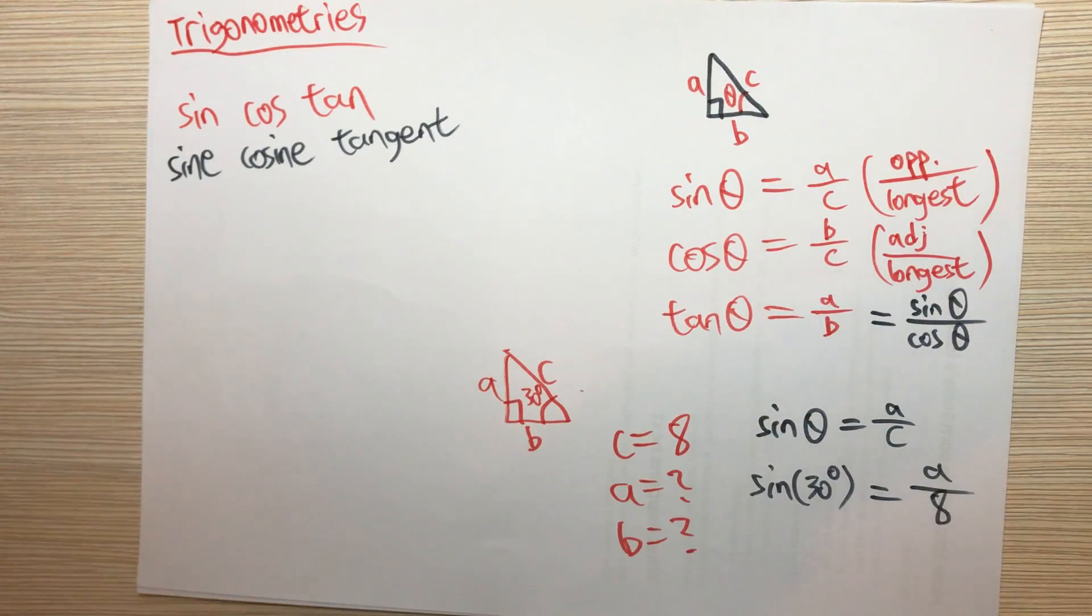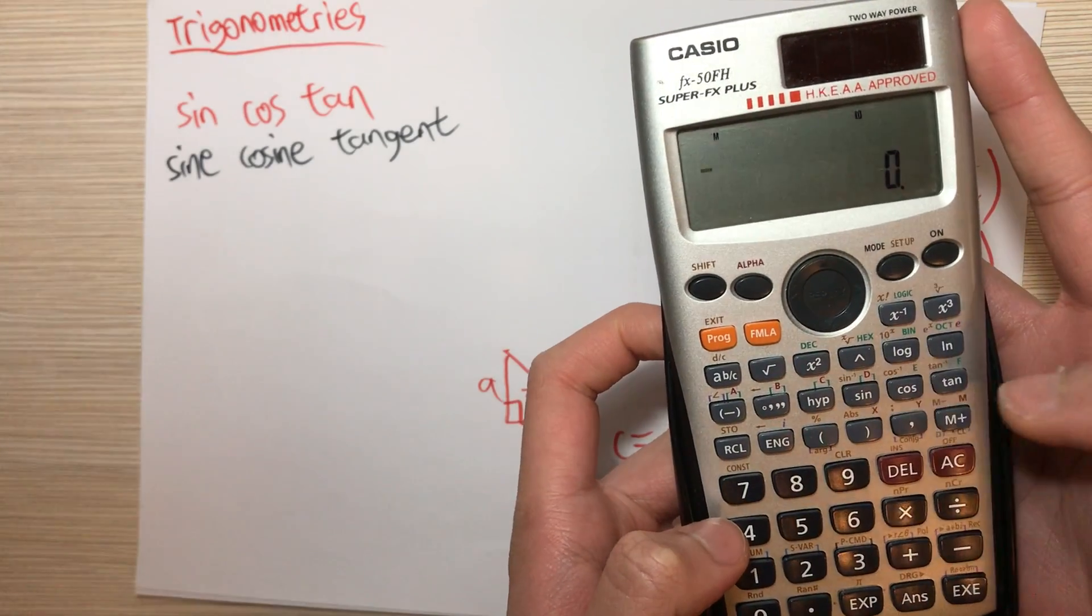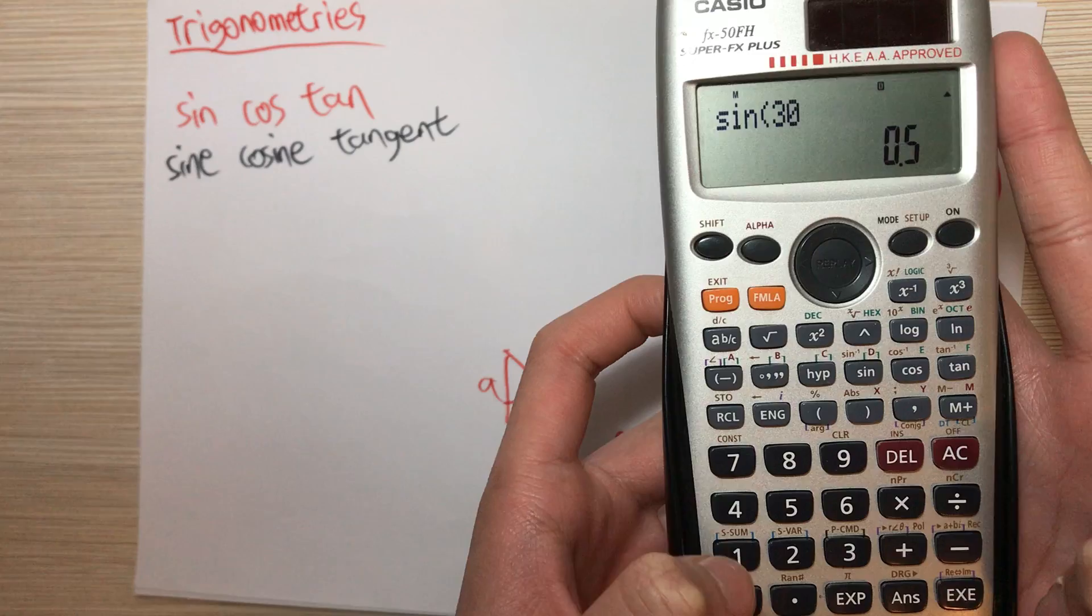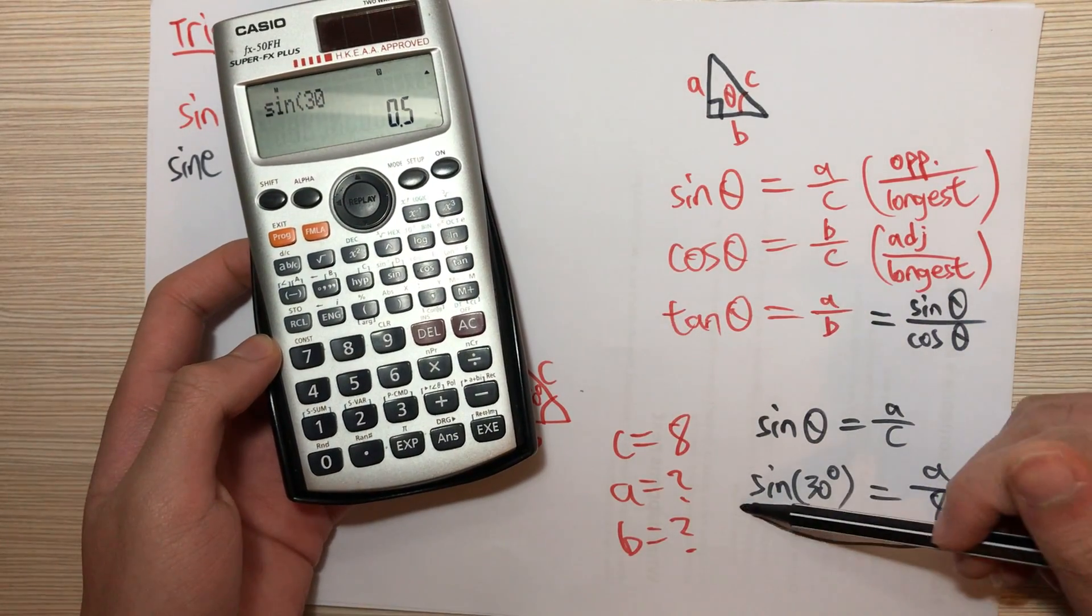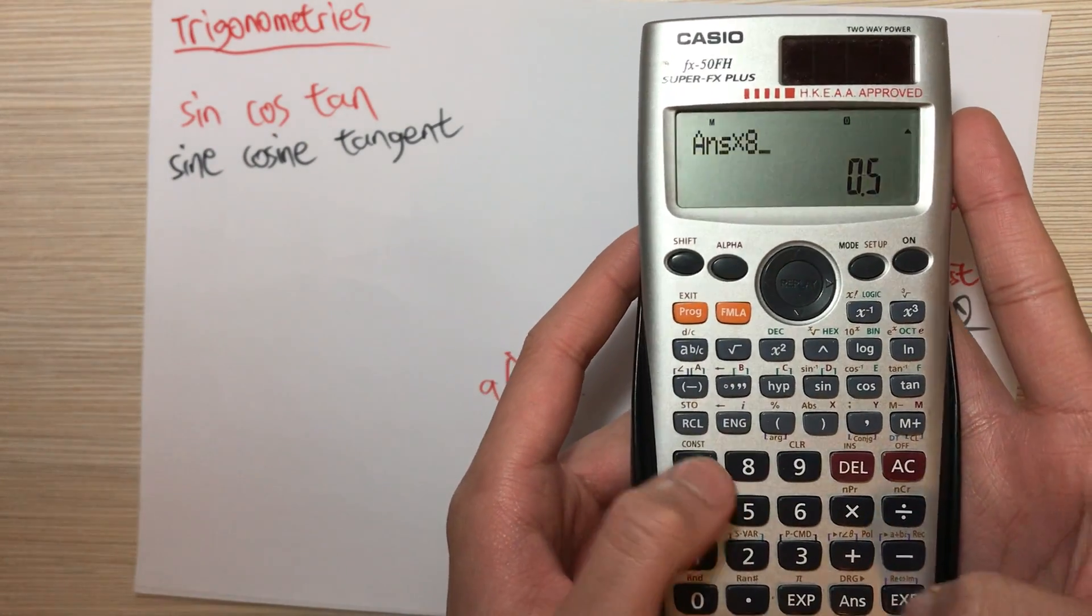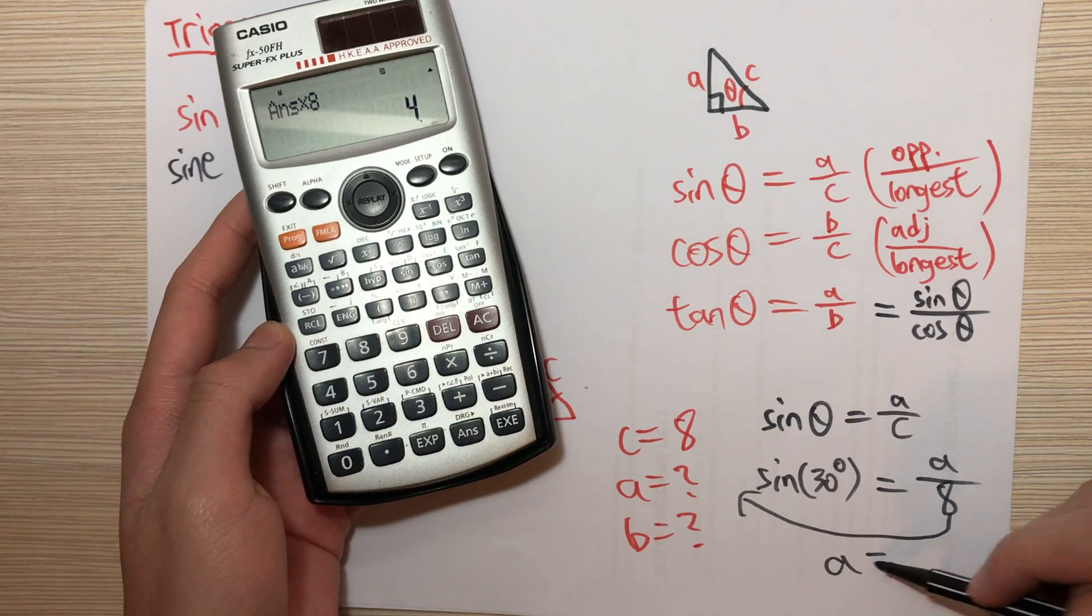So we take out our calculator and input sine 30 degrees. It is 0.5, and then we move this 8 to here, we multiply it by 8, so that we can tell that A is actually 4.